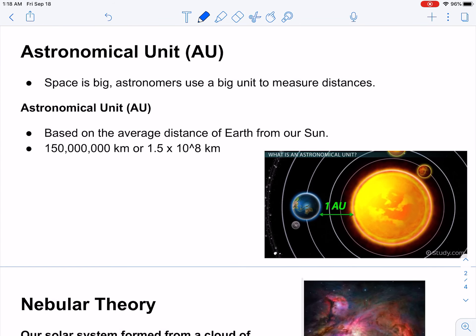Space is really big, and so astronomers have to use a really big unit to actually measure distances. The standard unit that's often used is called an AU, which stands for astronomical unit. It's just based on the average distance of Earth from the Sun. So there's one astronomical unit right there. It comes out to be about 150 million kilometers, 1.5 times 10 to the power of 8 kilometers.